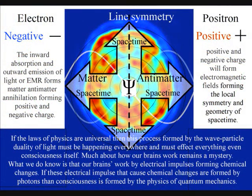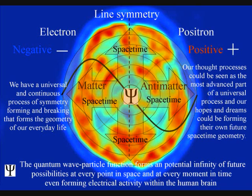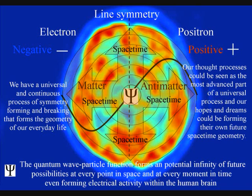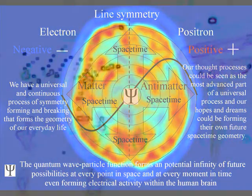Despite rapid progress, much about how the brain works remains a mystery, but what we do know is that our brains work by electrical impulses forming chemical changes. This electrical activity also forms electromagnetic fields. If these electrical impulses that cause chemical changes are formed by photons, then consciousness is formed by the physics of quantum mechanics.